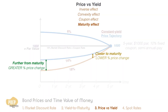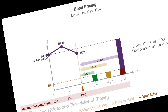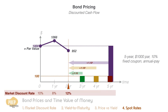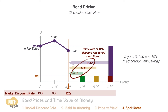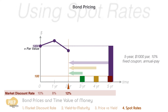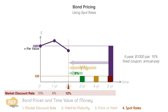Let's go back to our example at the beginning. For what we've learned about pricing bonds using the discounted cash flow method so far, we use the same market discount rate for every future cash flow. A more fundamental approach, however, is to use a sequence of market discount rates that correspond to the cash flow dates. These are called spot rates.